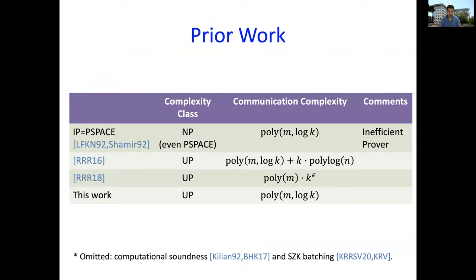That's the first main result. I want to contrast how it compares to previous work. The first thing I want to compare to is what you can get via the IP equals PSPACE theorem. To check that K NP statements are correct, you can do this in very small space by reusing space, using M plus log K space. If you then apply the IP equals PSPACE theorem to this, what you would get is an interactive proof with very good communication, polynomial M and log K.